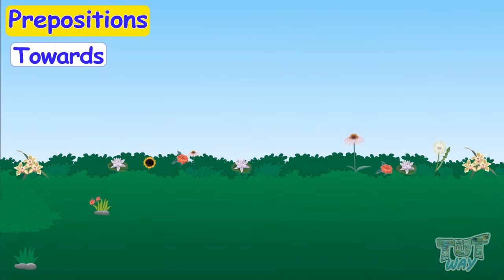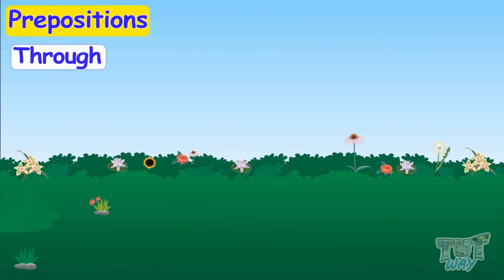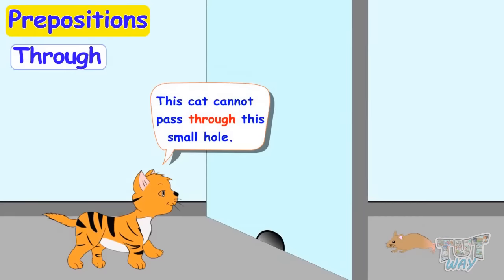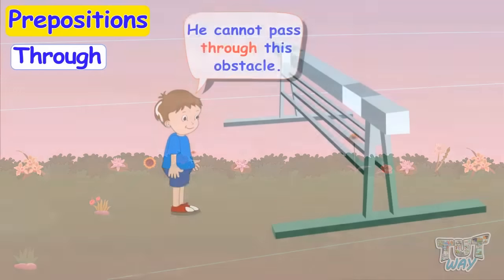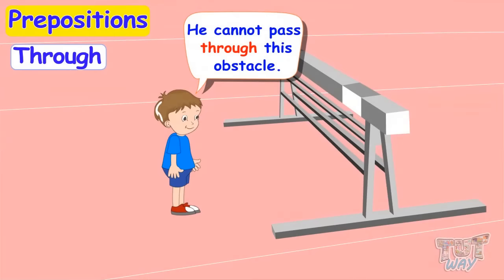Our next preposition is 'through'. This cat cannot pass through this small hole. He cannot pass through this obstacle.